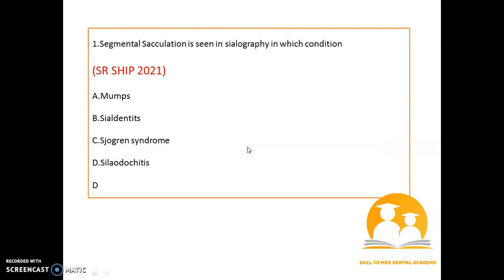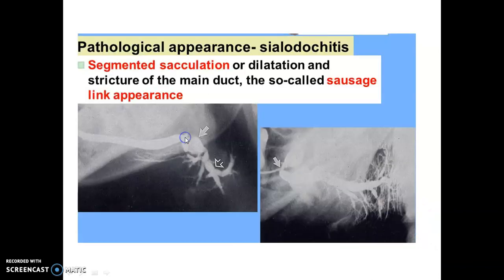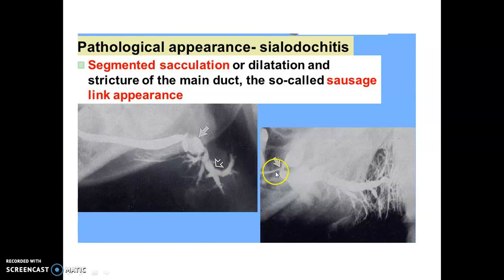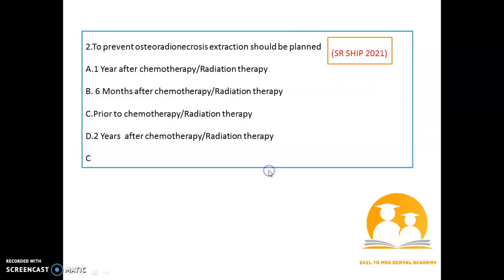The first question: segmental circulation is seen in sialography in which condition? It is most commonly seen in sialadenitis. You can see how it appears — a segmental dilation, and sometimes stricture of the main duct can also happen. It looks like a sausage link appearance.